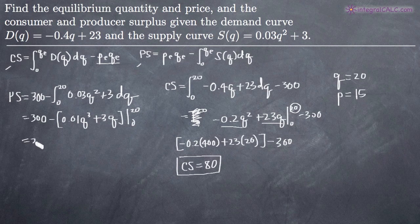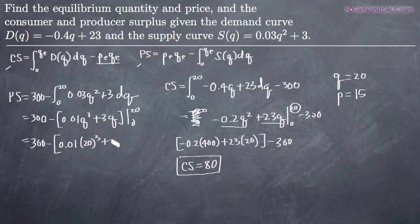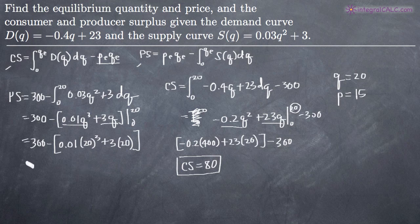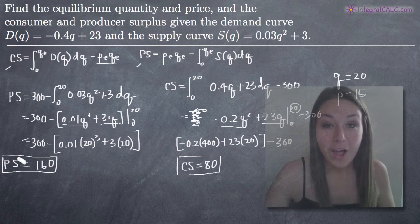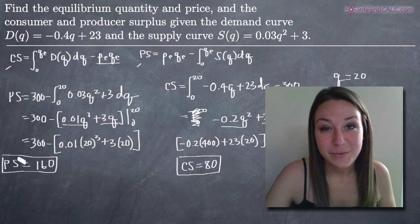So we end up with 300 minus (0.01 times 20 cubed plus 3 times 20). Normally we'd subtract what we get when we plug in 0, but we get 0 in both terms, so we don't need to subtract anything further. Working this out on the calculator, the producer surplus equals 160. That's how you find equilibrium quantity and price and then use those to find consumer and producer surplus. Hope that video helped — see you in the next one!